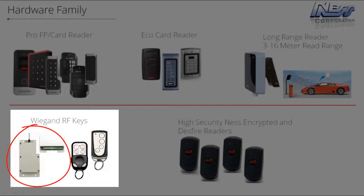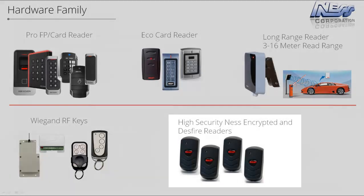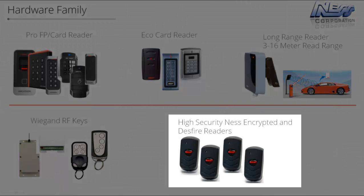Next we have our Wiegand RF keys, which come in two parts: the receiver section — either internal or external — and the radio keys, available in two-button or four-button versions. Each radio key has its unique Wiegand number, and on the receiver there are four different outputs. So for every button pressed — button 1, 2, 3, or 4 — you know exactly which radio key and button was used, and you can program the controller accordingly. We also have a full range of BQT readers, which are high-security readers with card encryption between the card and the reader.